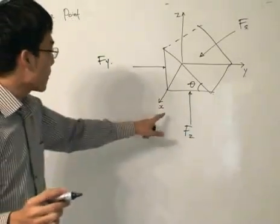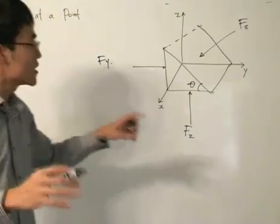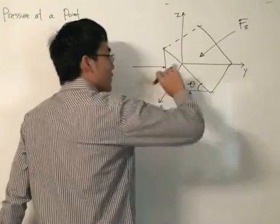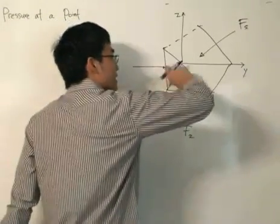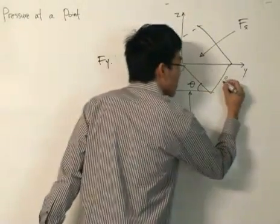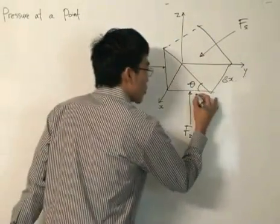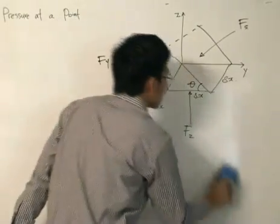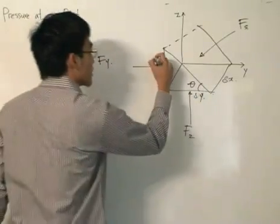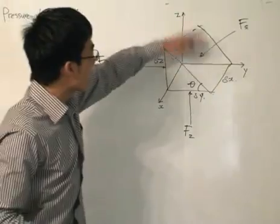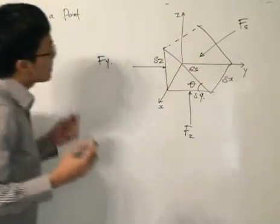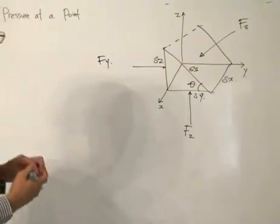You might be asking why I did not include the X axis — it's just for simplicity of the analysis. In a full analysis you would need to include the force due to the X axis, but we'll ignore that for now. So let's label some dimensions: this will be delta X, this will be delta Y, this will be delta Z, and lastly we label this slant surface as delta S.